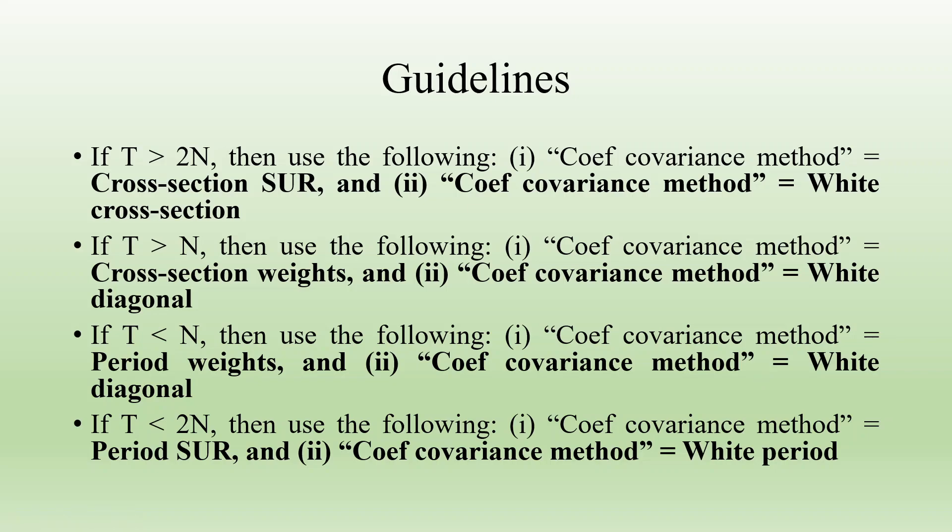If T is less than 2N, then use the following: coefficient covariance method is period SUR and coefficient covariance method is white period.